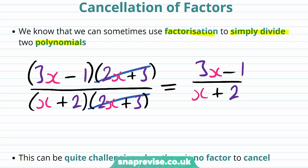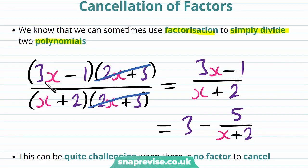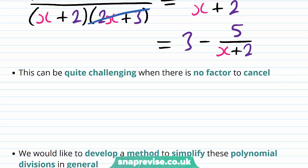And then we are able to manipulate the numerator and make it into a constant: 3 − 5/(x + 2), a proper fraction. In general, this can be quite challenging when there is no factor to cancel.